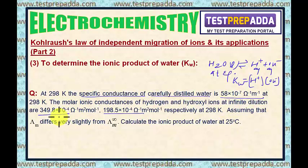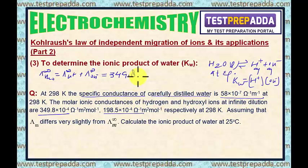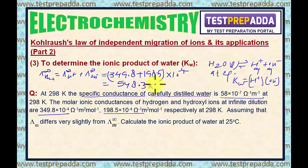First, get the value of λM∞ for H₂O. So λM∞ for H₂O = λ∞(H⁺) + λ∞(OH⁻), as per Kohlrausch's law. Substituting values: 349.8 × 10⁻⁴ + 198.5 × 10⁻⁴ = 548.3 × 10⁻⁴ Ohm⁻¹ m² mol⁻¹.